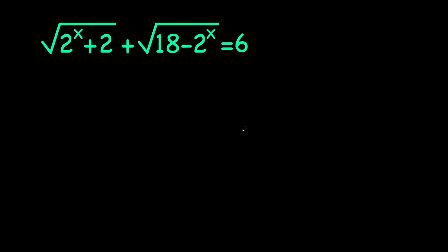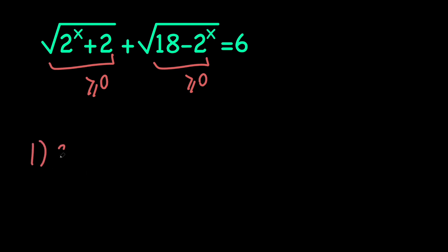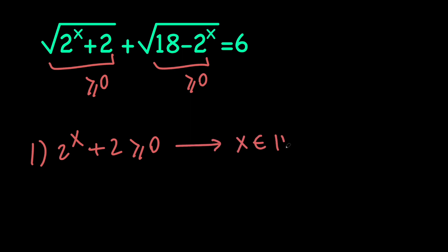Let's start by talking about the domain of this equation. We have two restrictions — we want both radicands to be non-negative. First, we want 2 to the x plus 2 to be greater than or equal to 0. Since 2 to the x is always positive, this is always true, so x can be any real number.